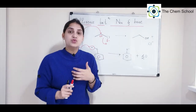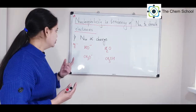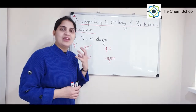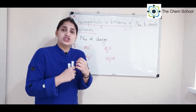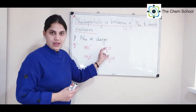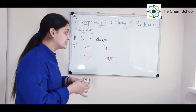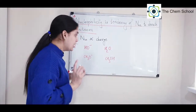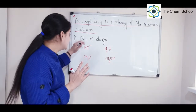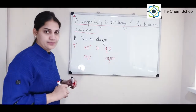Now let's look at the trends in nucleophilicity. The first trend: nucleophilicity is directly proportional to charge. If a nucleophile has a higher charge, the greater will be the tendency to donate electrons. For example, hydroxide ion (OH-) versus water — oxygen is the electron donor in both cases, but the negatively charged species donates electrons more readily, so OH- is more nucleophilic than water.